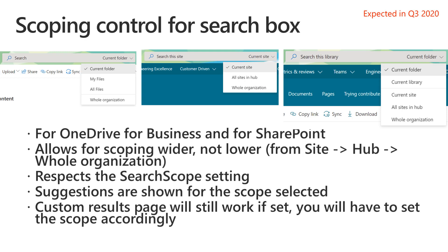The whole organization concept is present here as well — you can jump to the same place from anywhere. This is the universality of Microsoft Search: wherever you start, there's a contextual scope and the ability to jump to the whole organization as needed. Similarly, current folder and current library work in a library or a list, and you can jump to the site, then hub, then whole organization using the scoping control.